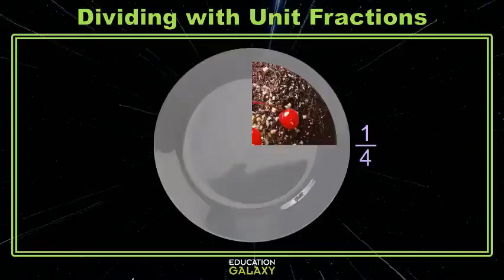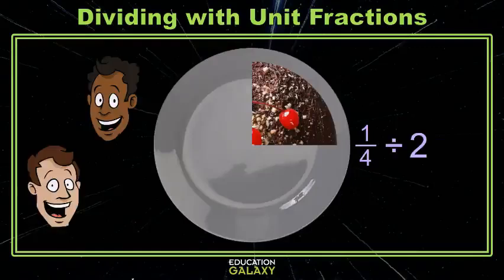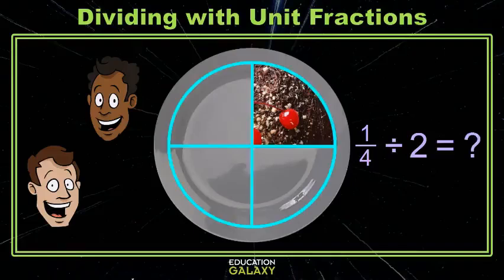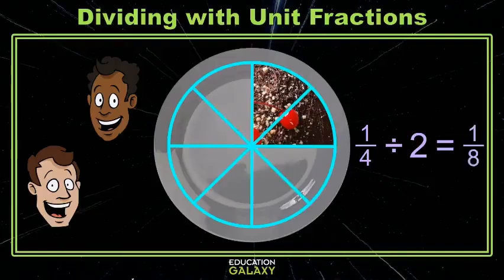Let's try another one. Here I have one-fourth of a whole cake, but let's say I have a couple friends who want to share this one-fourth of a whole cake. That's the problem, one-fourth divided by two. So let's take our fourth, let's chop it into two even slices. Now, you can see that each piece is one-eighth of the original cake. You can see that eight is the product of two and four.